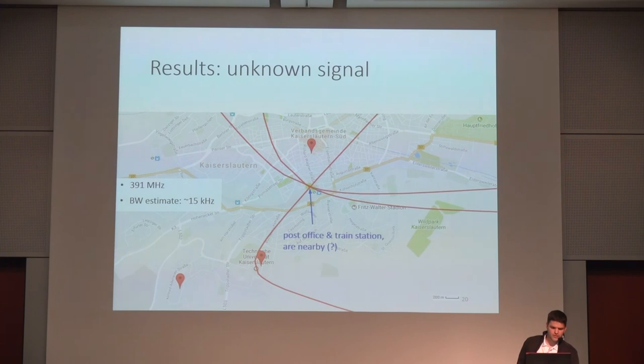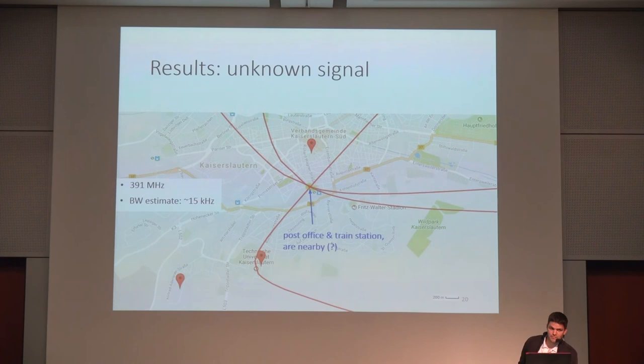The next signal is on 391 megahertz. I have no idea what it is — its bandwidth is approximately 15 kilohertz — and the hyperbolas intersect at one position. There is a post office or a train station nearby, but I'm not really sure what this signal is. At least I could localize it.